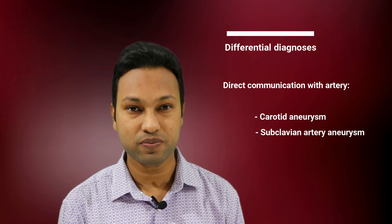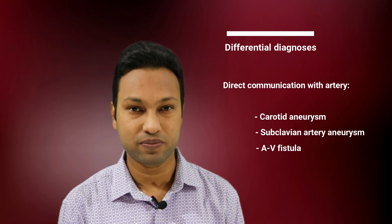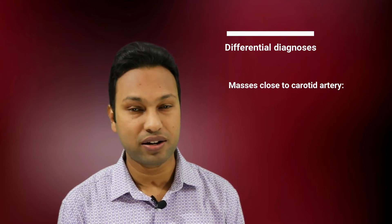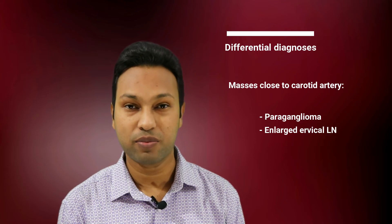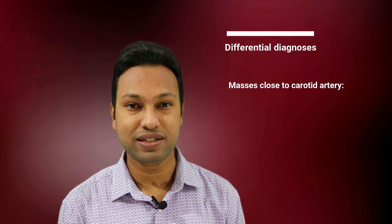The differential diagnoses: neck masses in direct communication with an artery include carotid aneurysm, subclavian aneurysm, and arteriovenous fistula. Neck masses that are close to the carotid artery include paraganglioma and enlarged cervical lymph node.